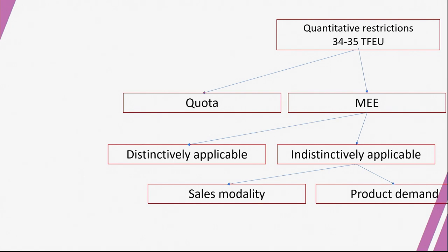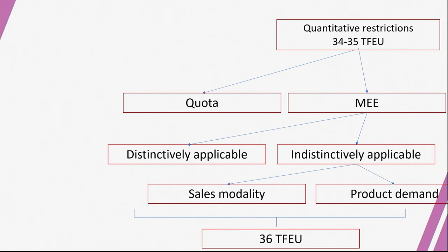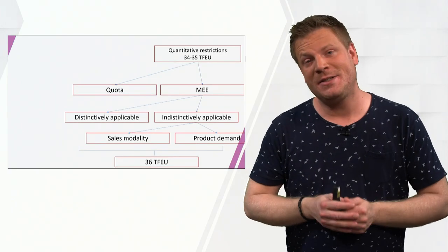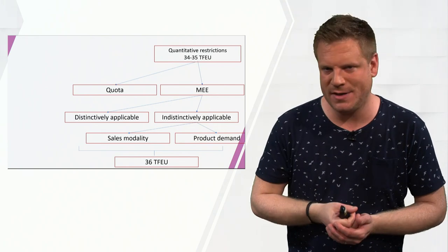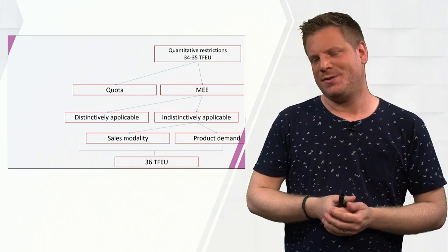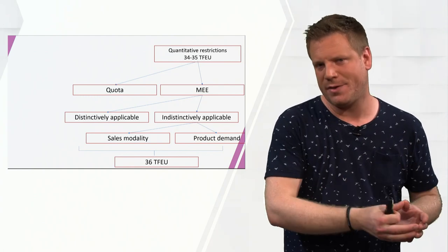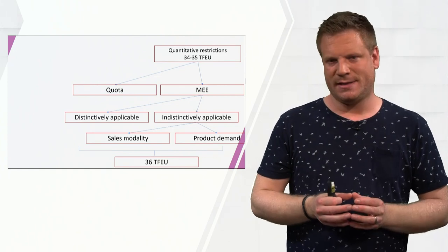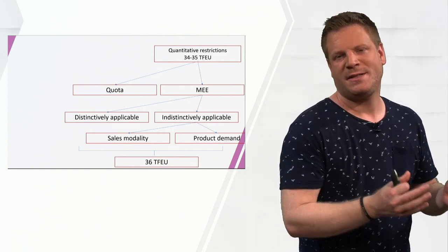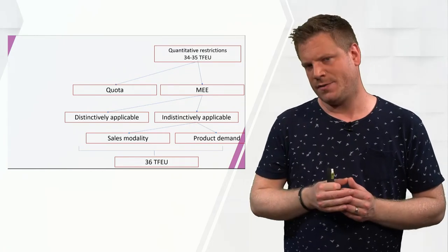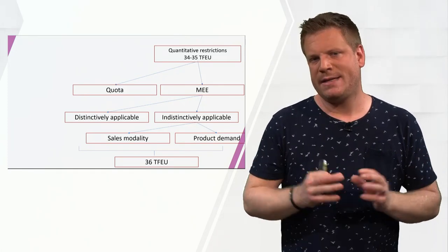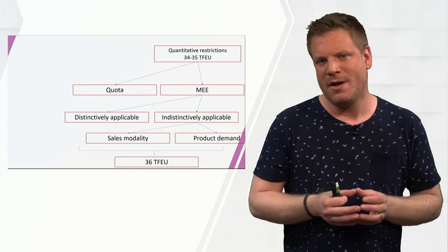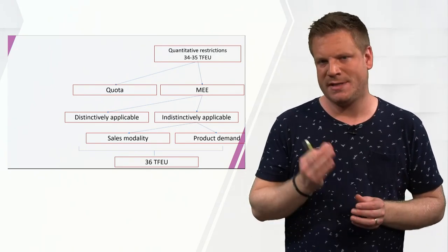There is one general exemption to all this: Article 36 of the Treaty on the Functioning of the European Union. This article enables countries to uphold any quantitative restriction as long as they comply with its wording, covering serious issues such as safeguarding public health. For example, during the BSE crisis, British cows were affected with BSE, which can cause Creutzfeldt-Jakob syndrome when consumed by humans. As a result, European countries on the mainland banned all British cows from their markets — a quota of zero — justified under Article 36 TFEU.